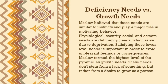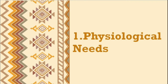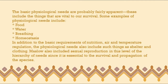The first level is the physiological need. The most basic physiological needs are probably fairly apparent — these are things vital to our survival, like water, food, breathing, and homeostasis. In addition to nutrition and air, physiological needs include shelter and clothing. Maslow also integrates sexual reproduction at this level, since it is essential for the survival and propagation of the species.